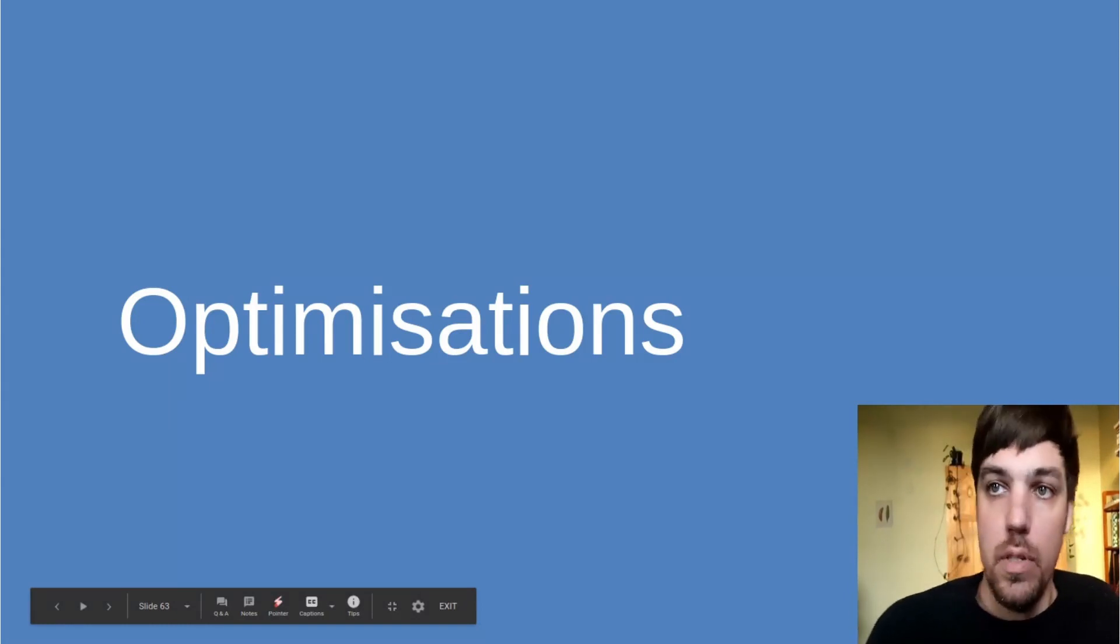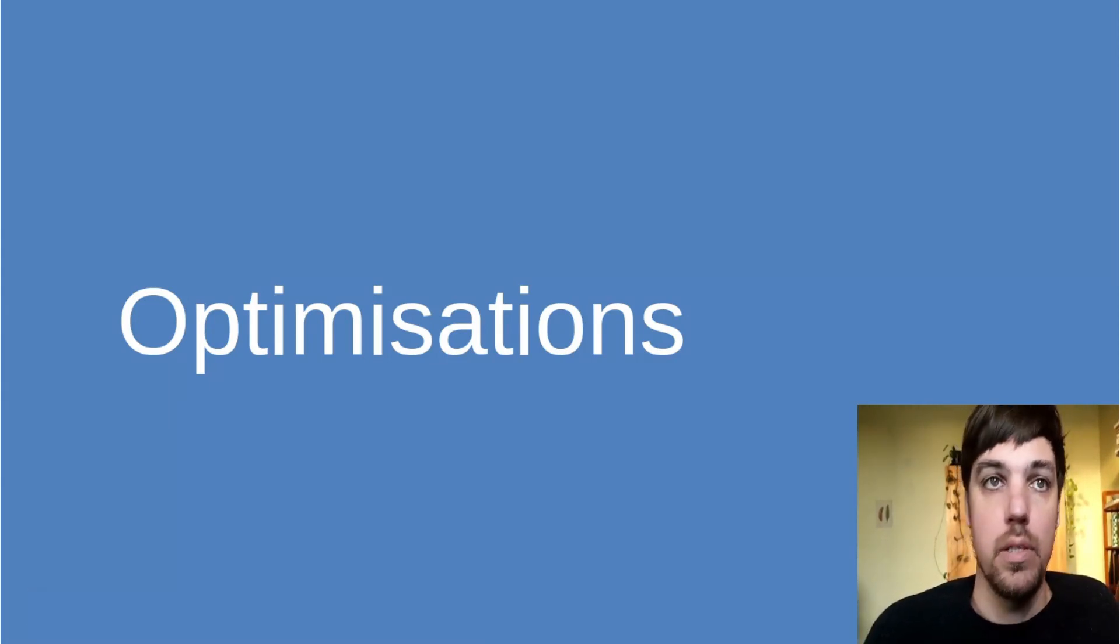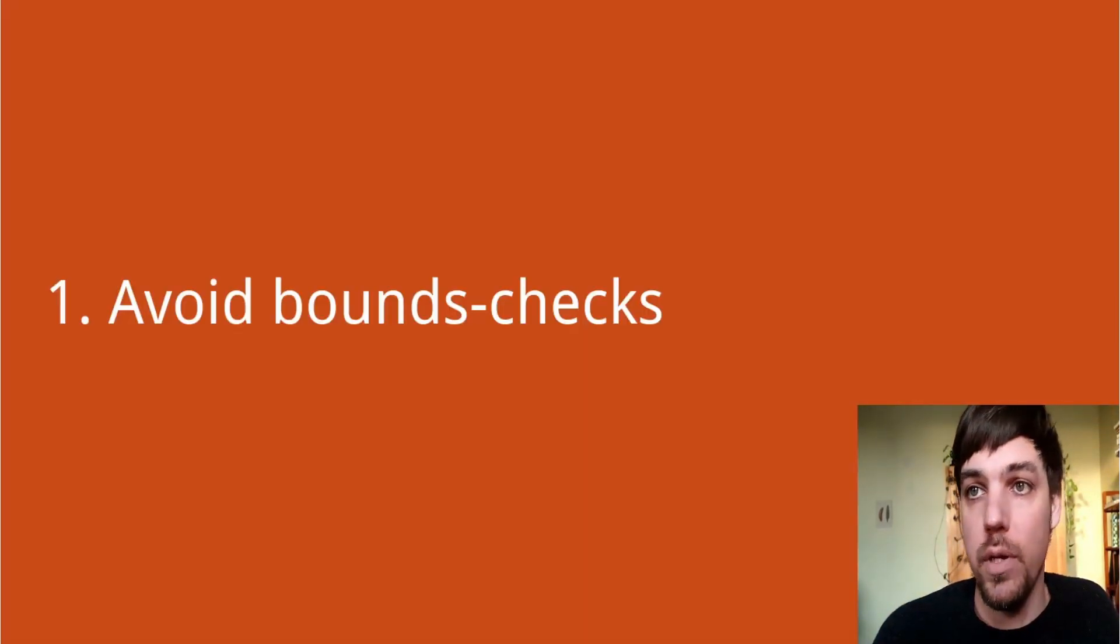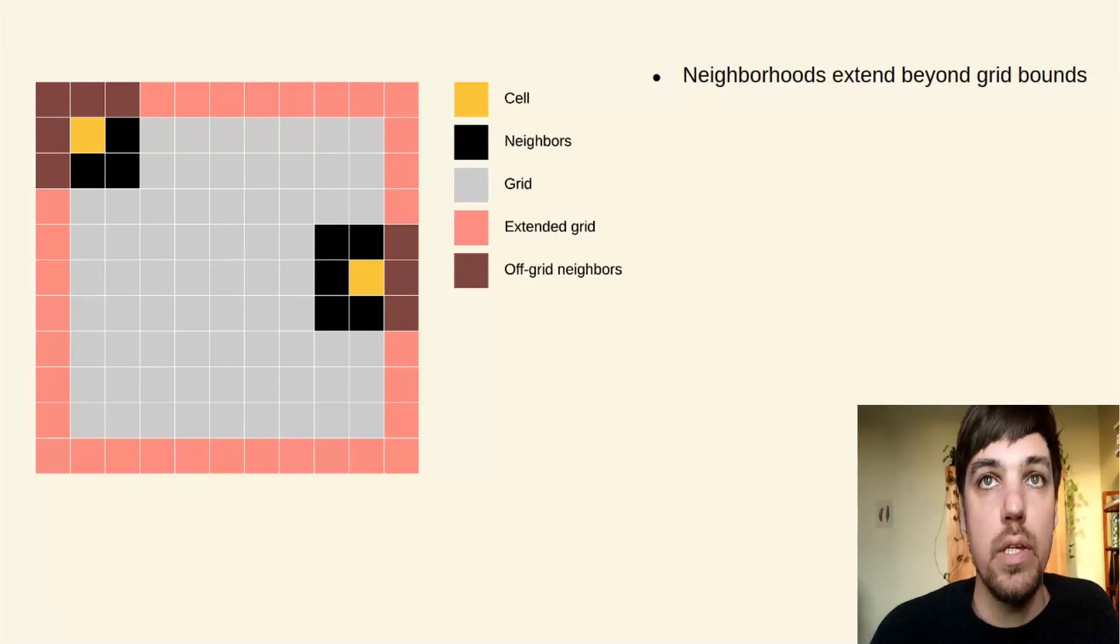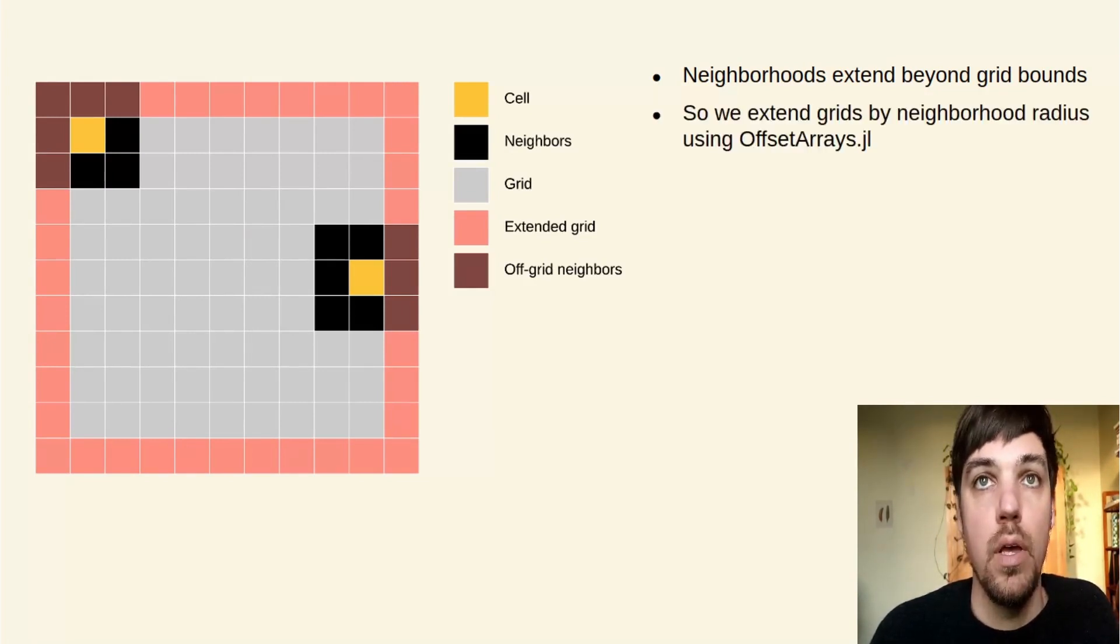Now let's look at some of the optimizations that go into making this package work, making it fast and making the script simple. The first is avoiding bounds checks. Generally, neighborhoods can extend beyond the bounds of the grid. The edge of the neighborhood can hang off the edge.